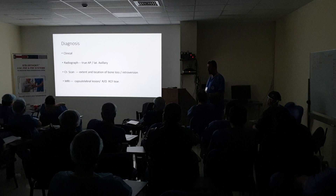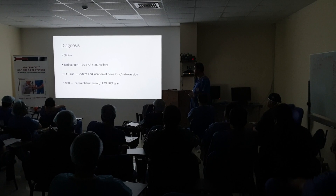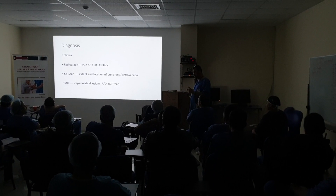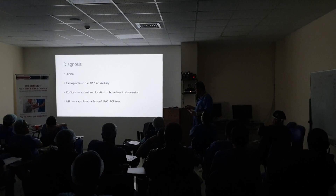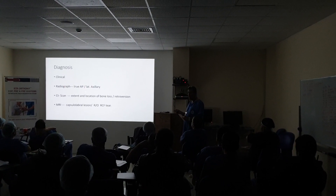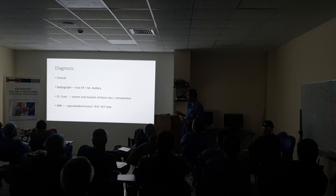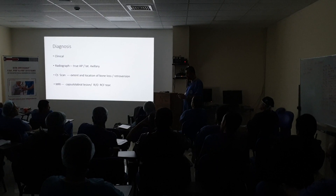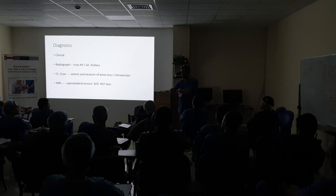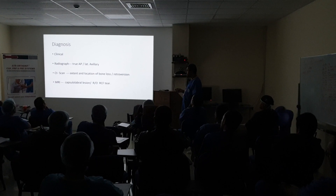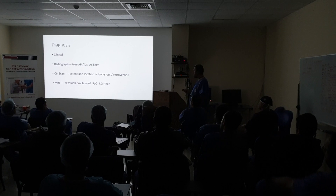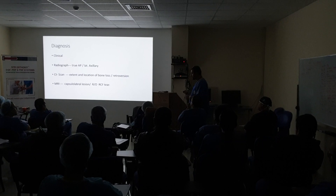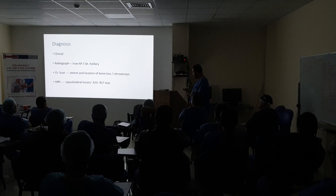For diagnosis, clinical examination is very important — history and physical examination can diagnose most of these instabilities. In acute cases, you must do AP and lateral view X-ray of the shoulder. The lateral axillary view is very important as it can show posterior dislocation and help avoid missing it. CT scan is also important to show the extent of bone defect and degree of glenoid retroversion, which is one of the factors leading to posterior instability.